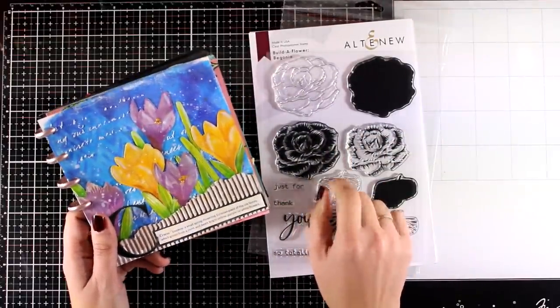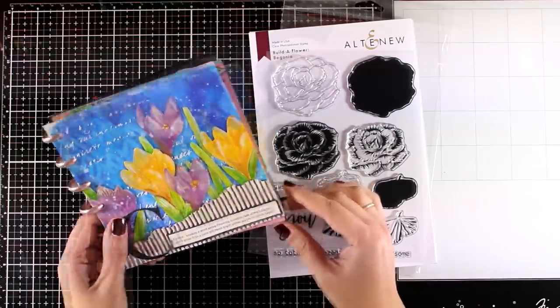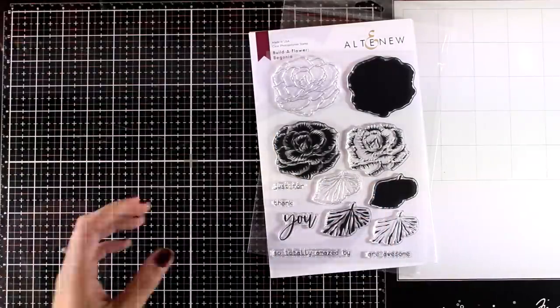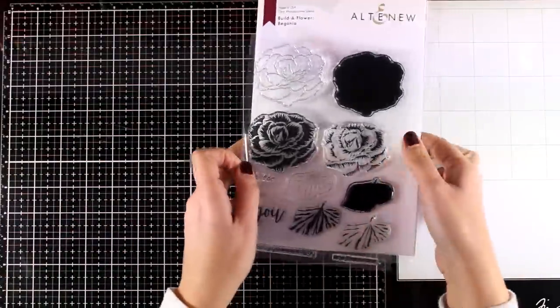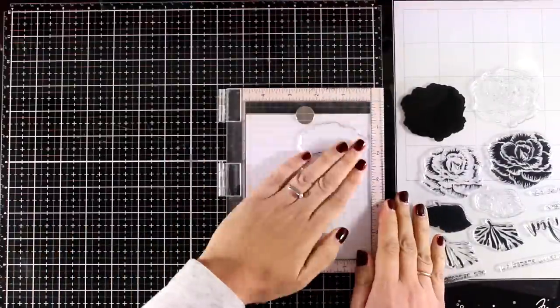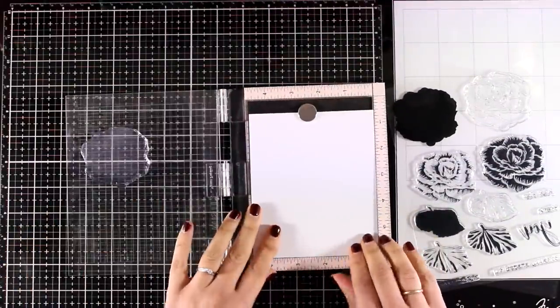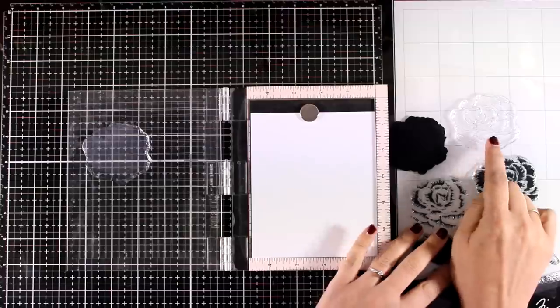So today the focal point is going to be that beautiful Begonia flower so I'm going to do some stamping first. I will be working with the layers so I'm going to use my stamping platform from MISTI and I will not use the outline at all.